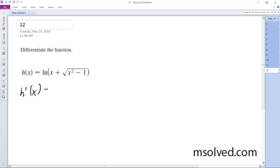Alright, h prime of x is going to be equal to 1 over this whole quantity, so x plus the square root of x squared minus 1 times 1 plus,